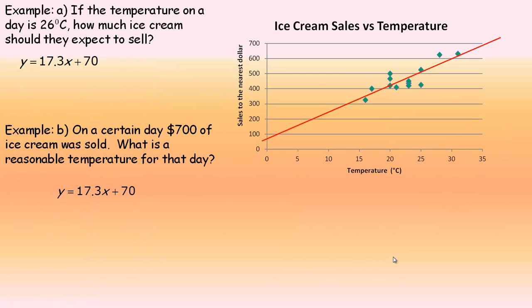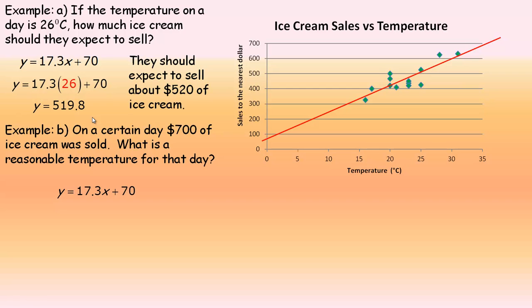We're going to use this on the next page to answer a couple questions. The first one says if the temperature on a certain day is 26 degrees Celsius, how much ice cream should they expect to sell? This is the temperature, so we put this in place of X. We go 17.3 times 26 plus 70, which is about 519.8.